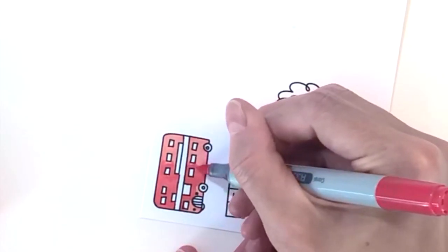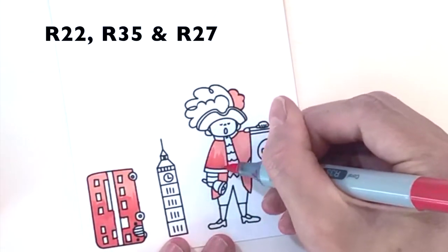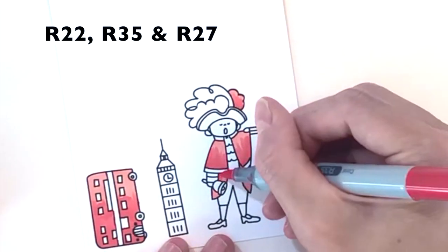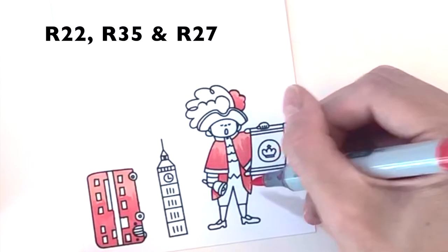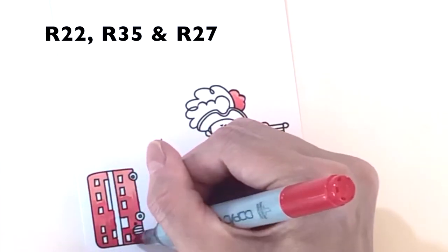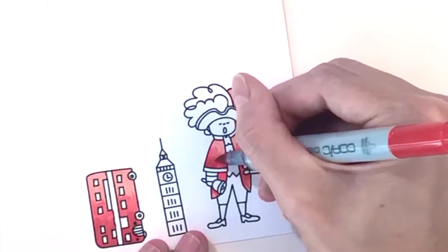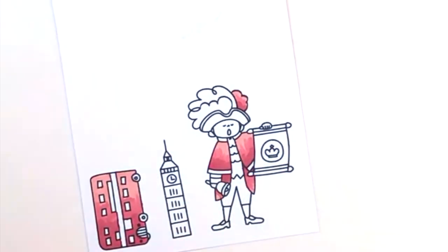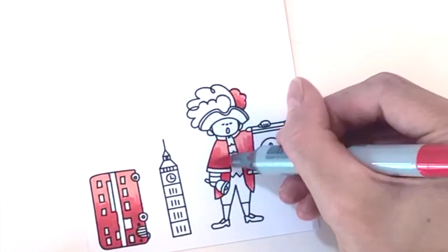I'm now just Copic coloring these images. The colors I'm using are on screen so you can follow along. My basic method for Copic coloring is I start with my lightest and I color the whole area.